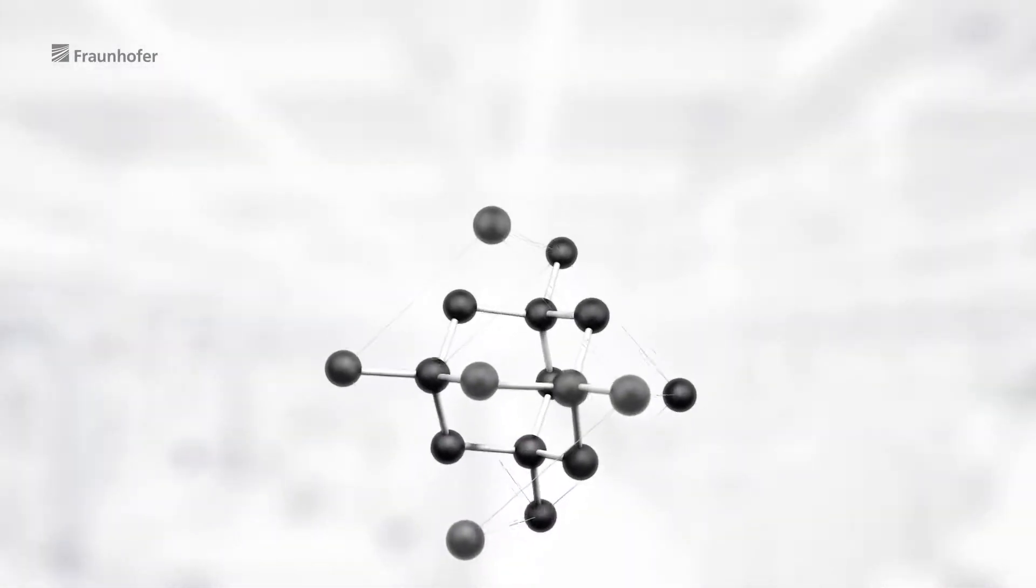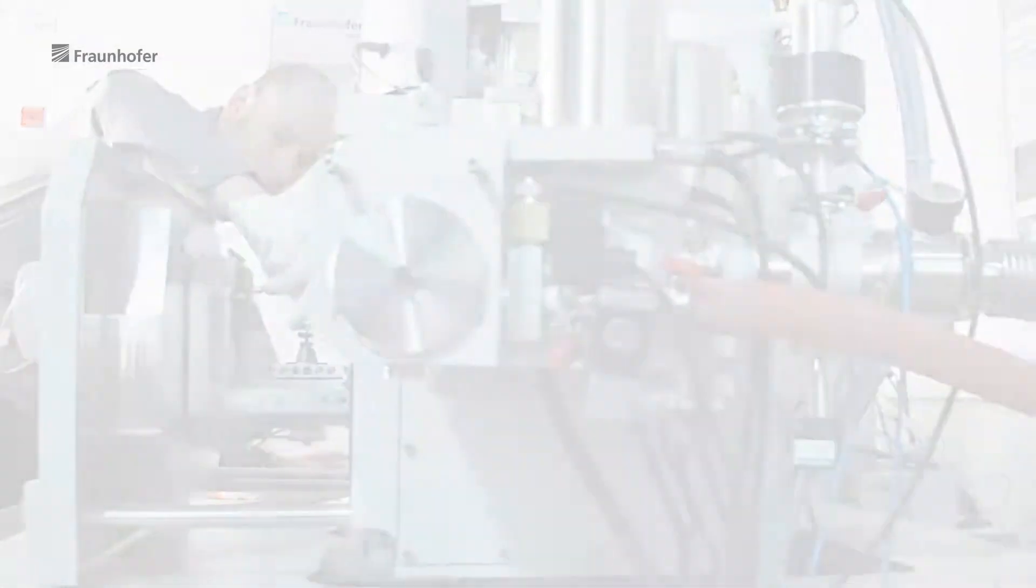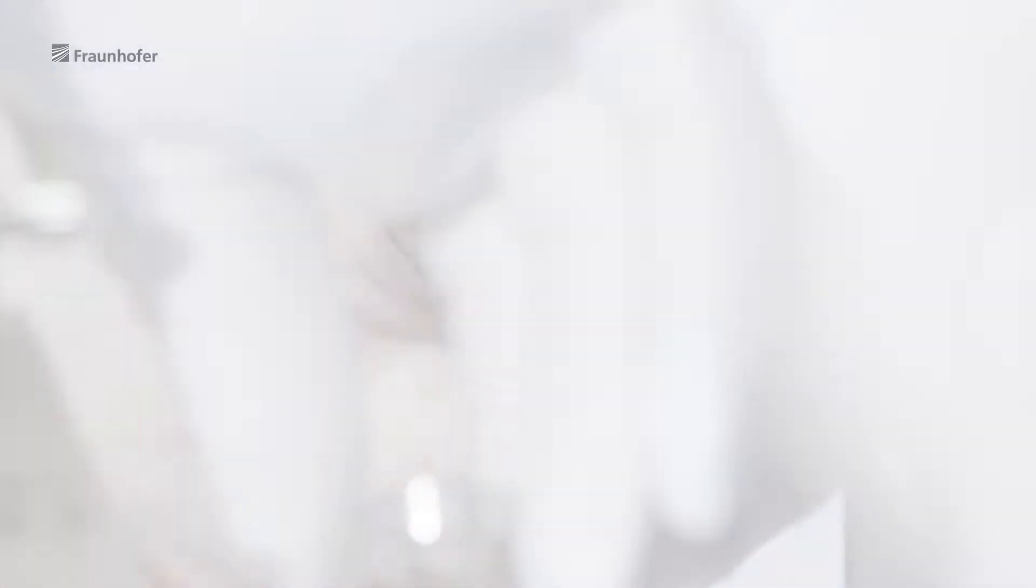We can only achieve sustainable solutions if we penetrate right into the very heart of things and consider the materials down to their smallest components. At the Fraunhofer Institute for Microstructure of Materials and Systems in Halle, we investigate the detailed makeup of these materials.